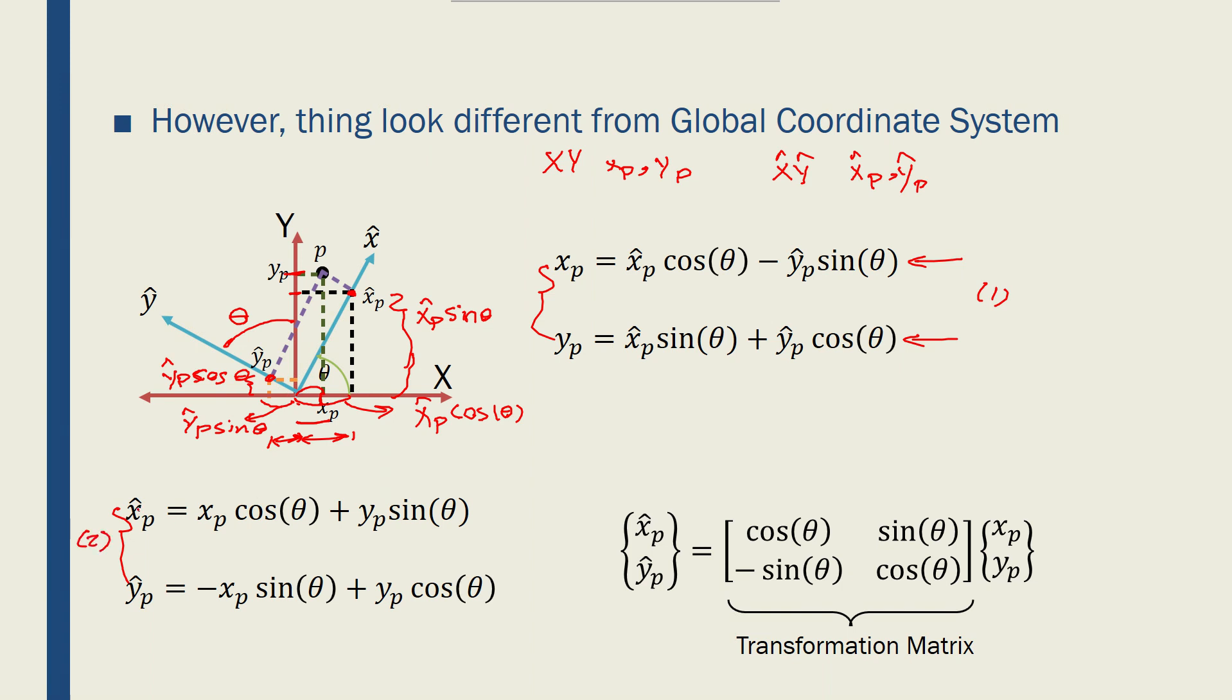Basically, a relationship between the local coordinates of point P and its global coordinates, and theta is the angle between the two coordinate systems.